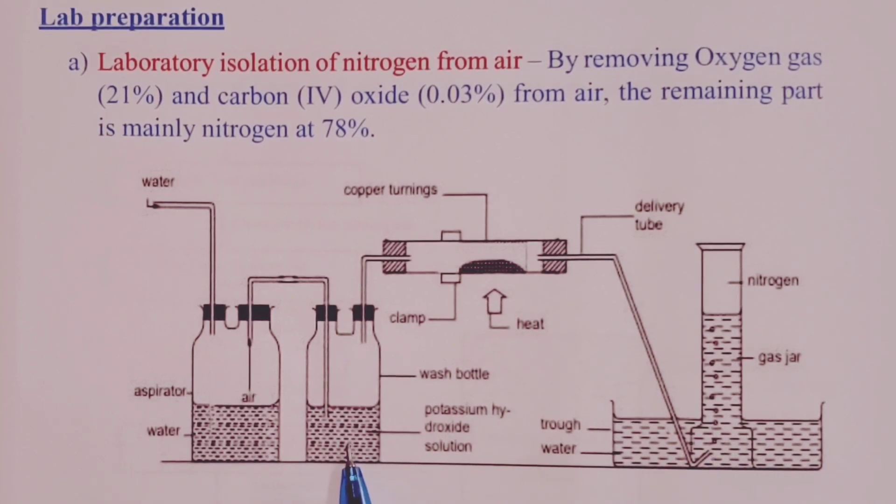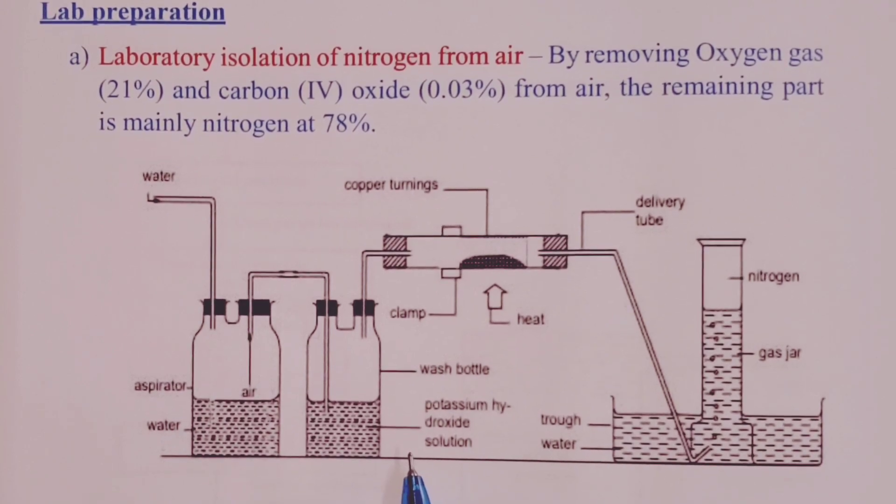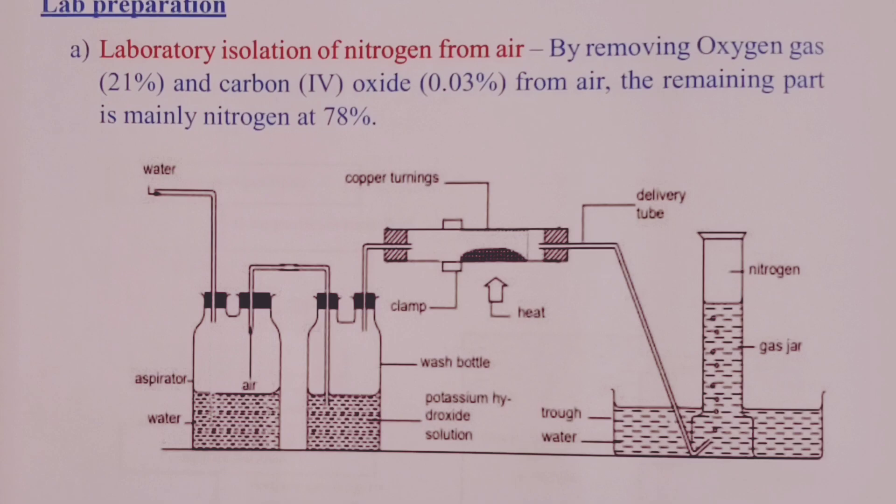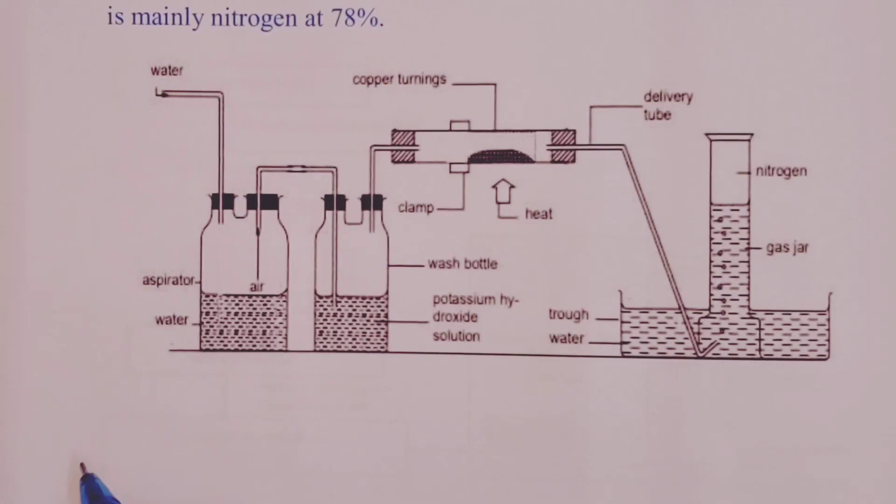Then, in our wash bottle too, we shall put in our strong alkali. This is potassium hydroxide. What it does is to remove our carbon (IV) oxide.